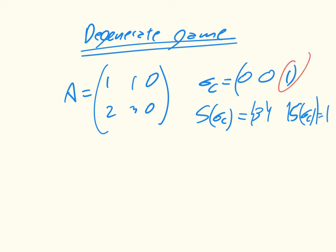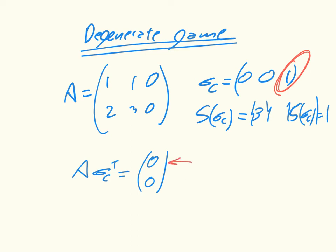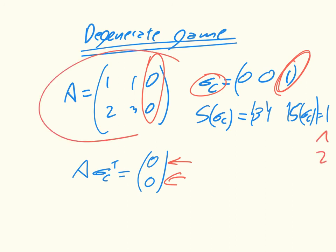The support of σ_c is just {3} — the one non-zero entry. If we consider the utilities of all the pure strategies for the row player against σ_c, we get (0, 0), because [1, 1, 0] · (0, 0, 1) = 0 and [2, 3, 0] · (0, 0, 1) = 0. This simply means there are two best responses to σ_c. Since two is bigger than one (the support size), this is what's called a degenerate game.